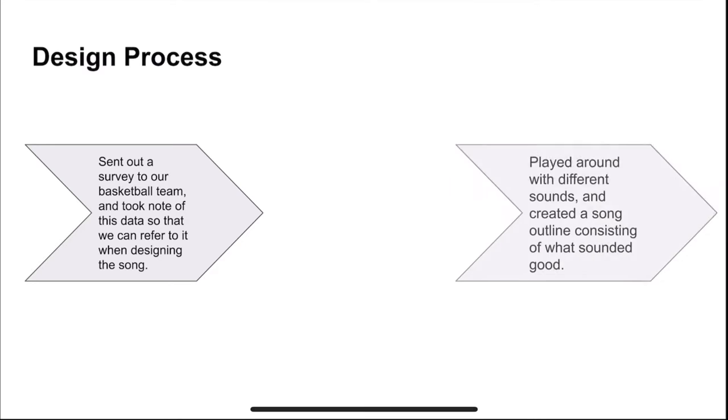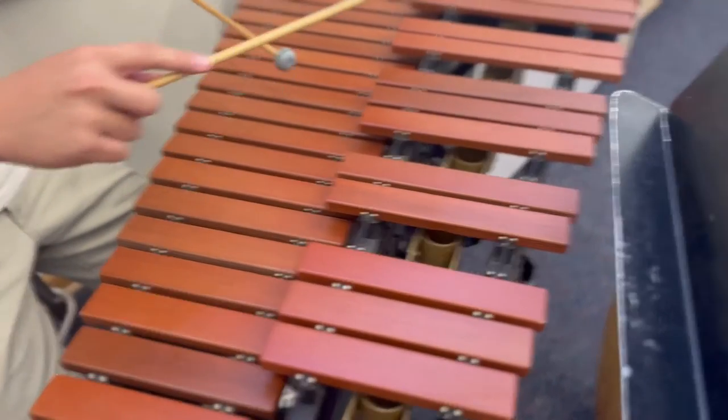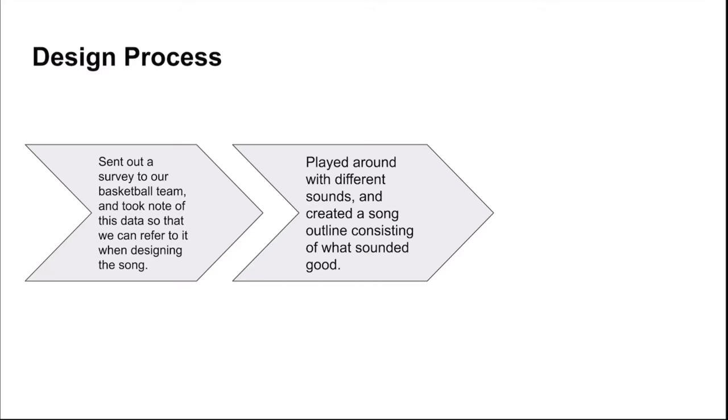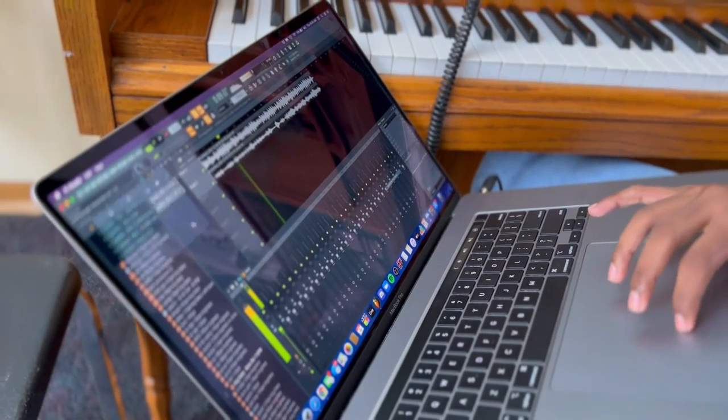Then we started to spend class time in our school's music room and played around with instruments to see what sounds good and what doesn't. As we narrowed down the sounds we wanted to incorporate, we made a song outline which consisted of musical components like tempo, rhythm, intensity, and melody.